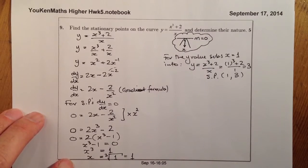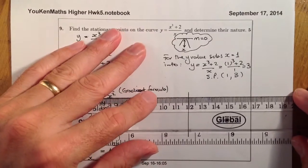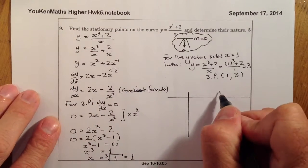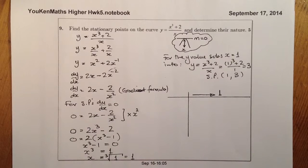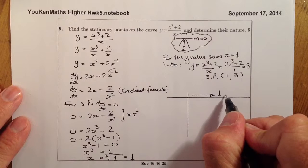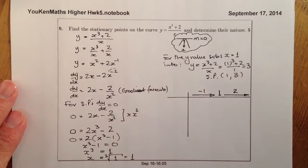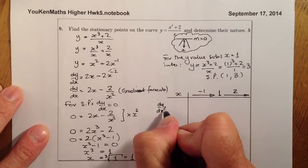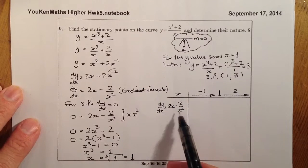The next thing I'm going to do is set up a nature table, because I need to know which way this actually turns — what's the shape of this graph. I've only got one stationary point, and the x value is 1, which I'll write halfway along the line. I'll think about a number coming in from the left and one going away from 1 — let's use 2 here and minus 1 there. In the table I'm going to use the formula dy by dx: 2x minus 2 all over x squared, as my gradient formula.